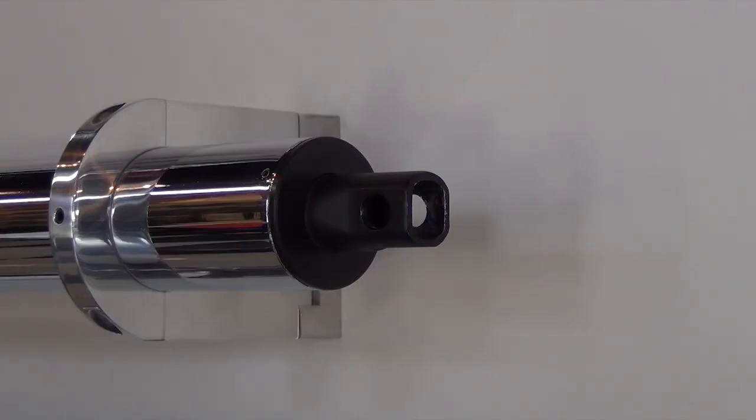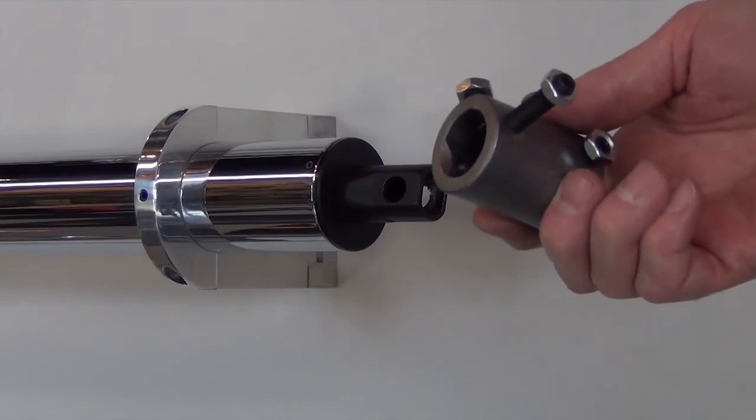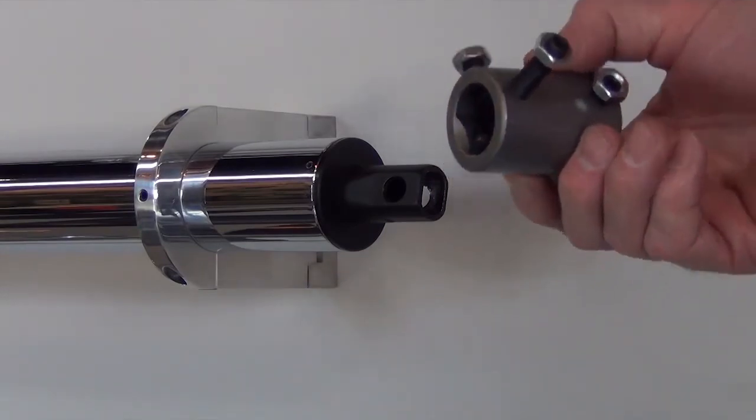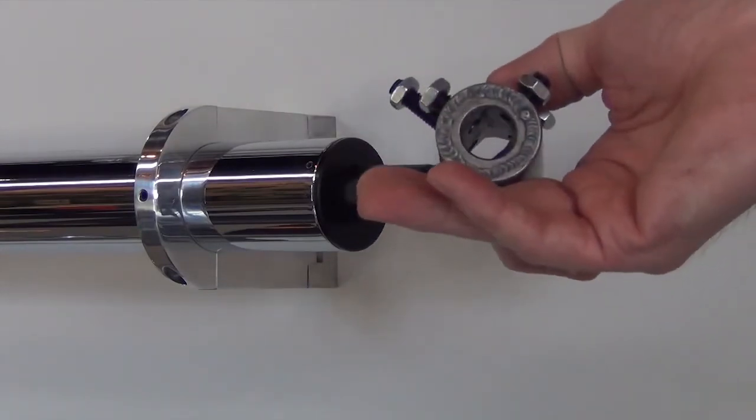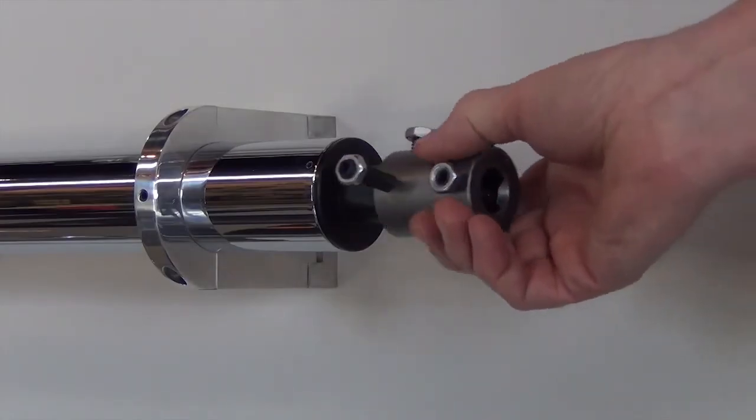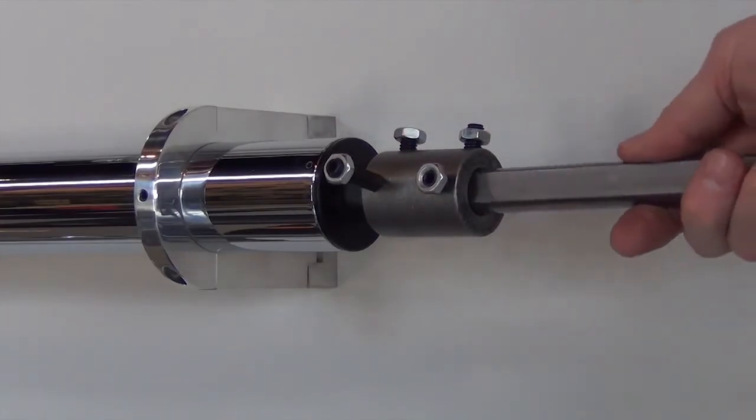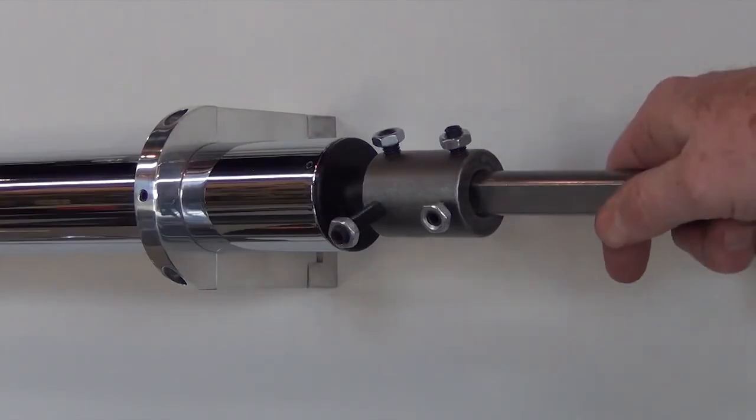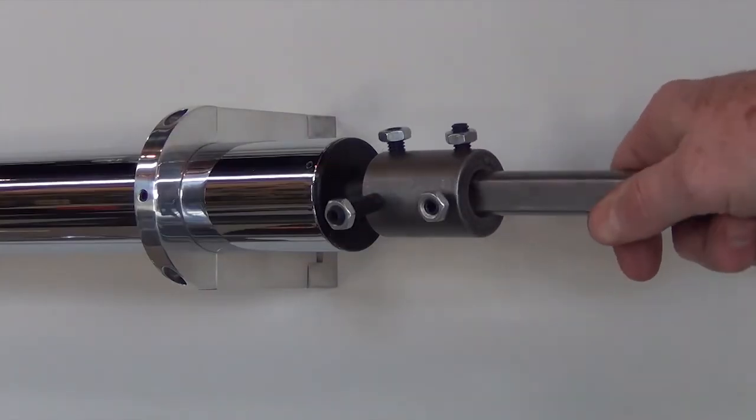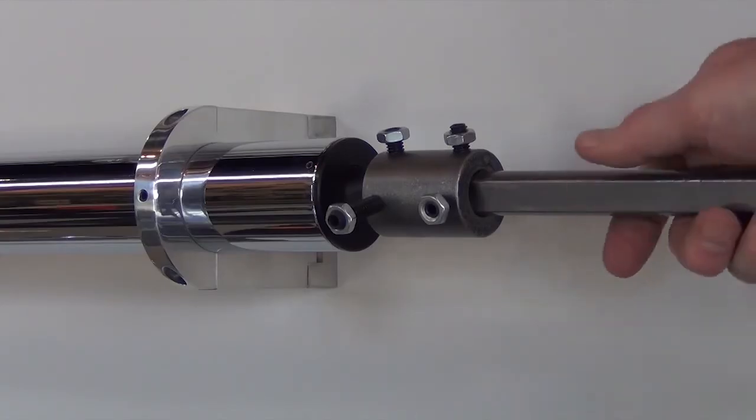And now we'll show you the proper way to make this connection. I've got a Borgeson coupler here, it's one inch double D on one side, three-quarter inch double D on the other side. We slide this onto the double D shaft of the column, we put the three-quarter inch shaft in there. Obviously we've got set screws on there, you tighten those down, you've got a much more secure and certainly safer steering system.